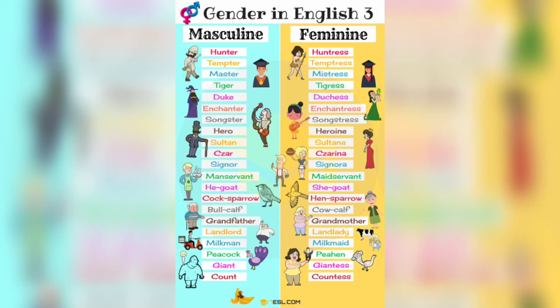Bull calf — cow calf, grandfather — grandmother, landlord — landlady, milkman — milkmaid, peacock — peahen, giant — giantess. You can see the various examples given with pictures in order to understand the masculine and feminine gender of a noun.